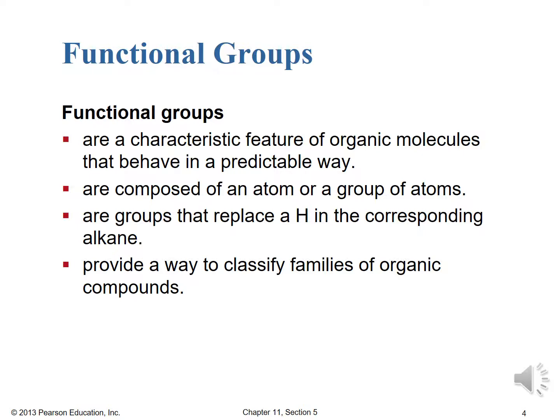But basically what it boils down to is what types of functional groups are present — that will define the type of chemistry we expect. Functional groups are composed of an atom or a group of atoms, and functional groups are groups that replace a hydrogen in the corresponding alkane. We've already seen that with the halo alkanes where we took a hydrogen away and added a fluoro or what have you. We even looked at just alkyl groups as taking away a hydrogen and adding a methyl or an ethyl group. Finally, functional groups provide a way to classify families of organic compounds. Alkanes are alkanes because they have just carbon and hydrogens present.